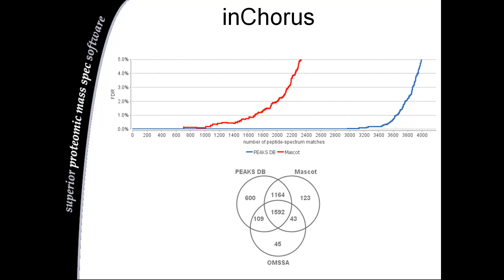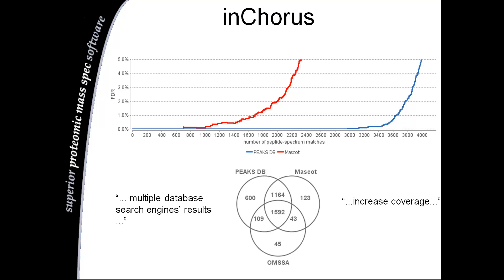This allows you to identify peptides even when you are working with an unsequenced organism or highly variable proteins. INCORUS combines multiple database search engine results to increase coverage, while comparing different engines' performance side by side. INCORUS is able to simultaneously run and compare MASCOT, XTandem, Sequest, OMSA, and of course PEAKS.